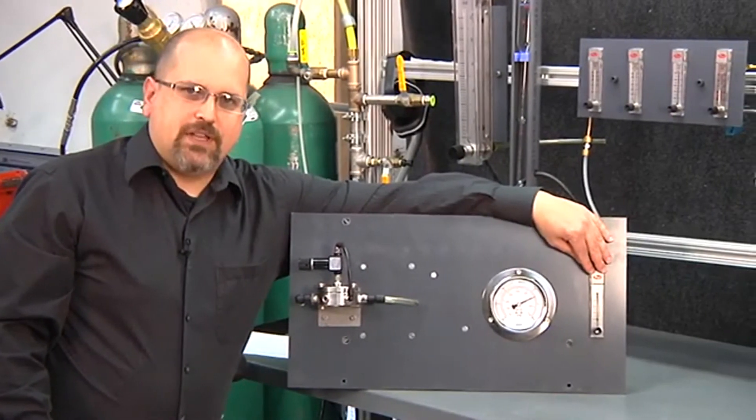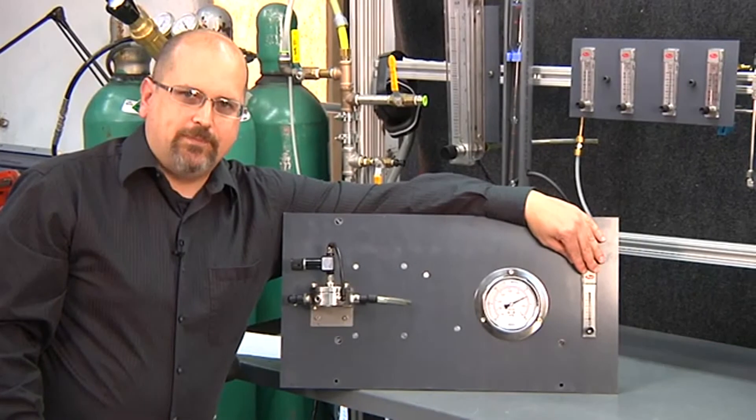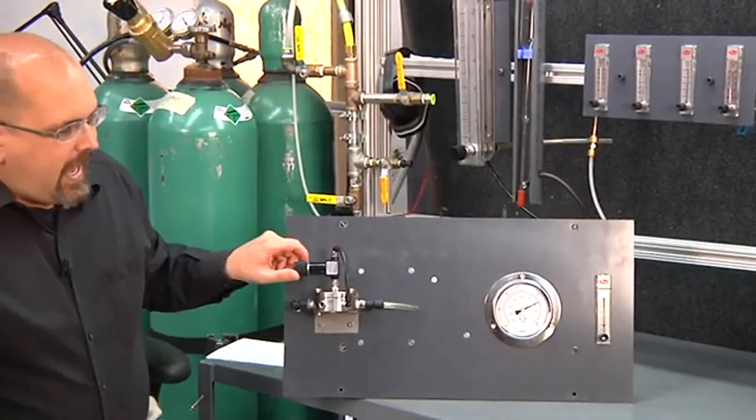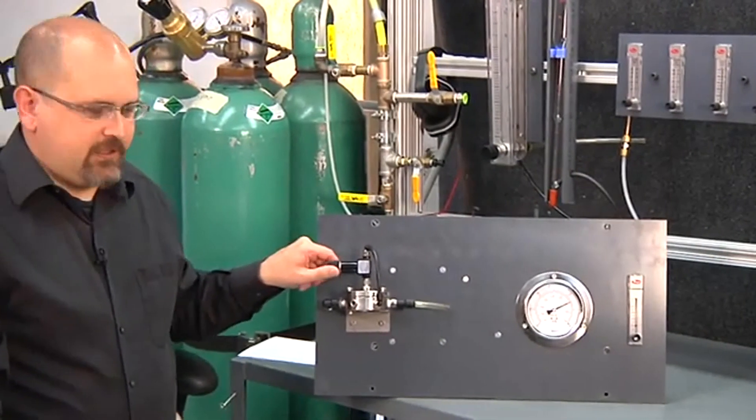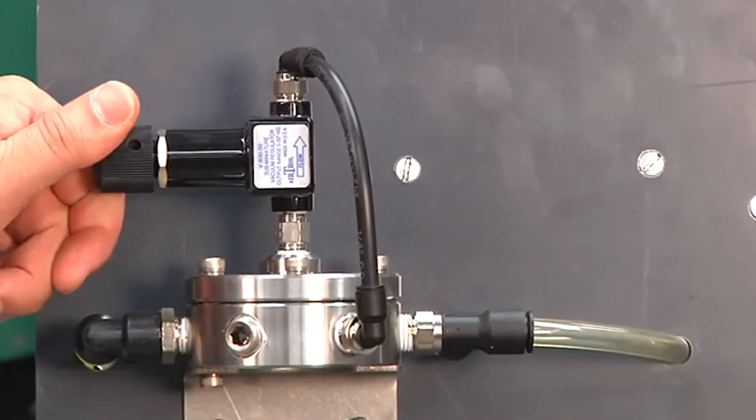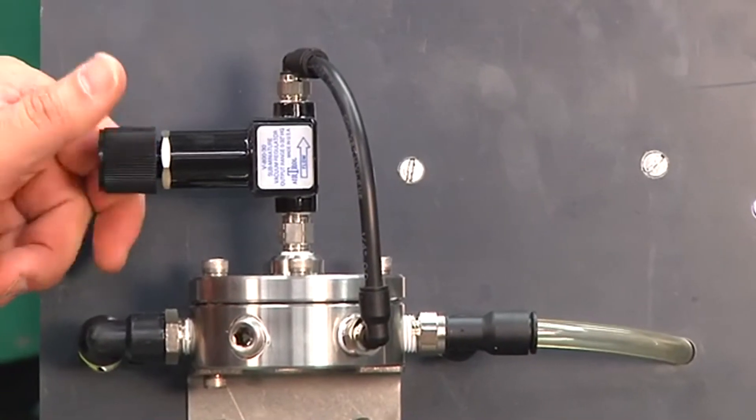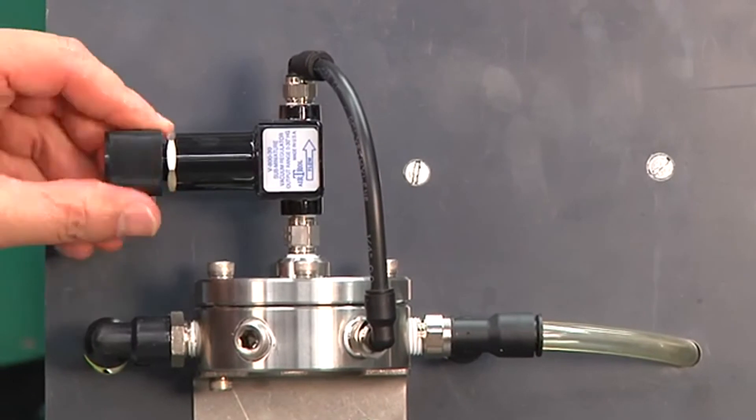The system vacuum is represented by this variable orifice and flow meter. I set the vacuum pressure by manually adjusting this knob and I can adjust this anywhere from atmosphere through full vacuum.